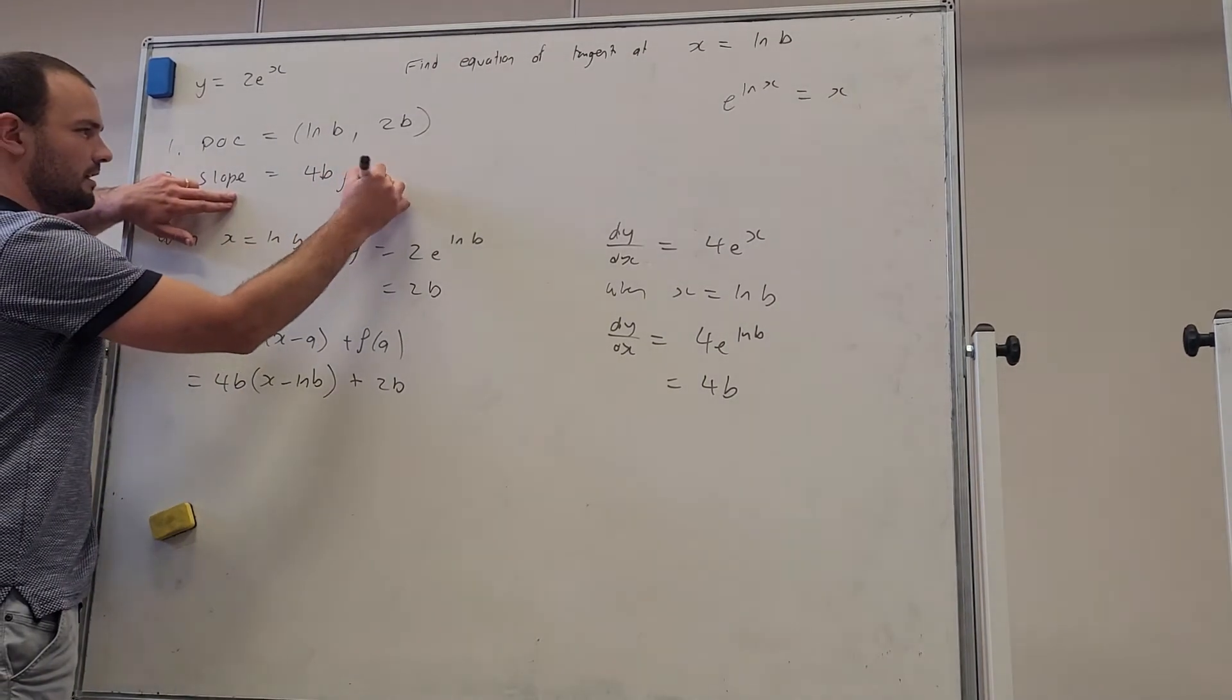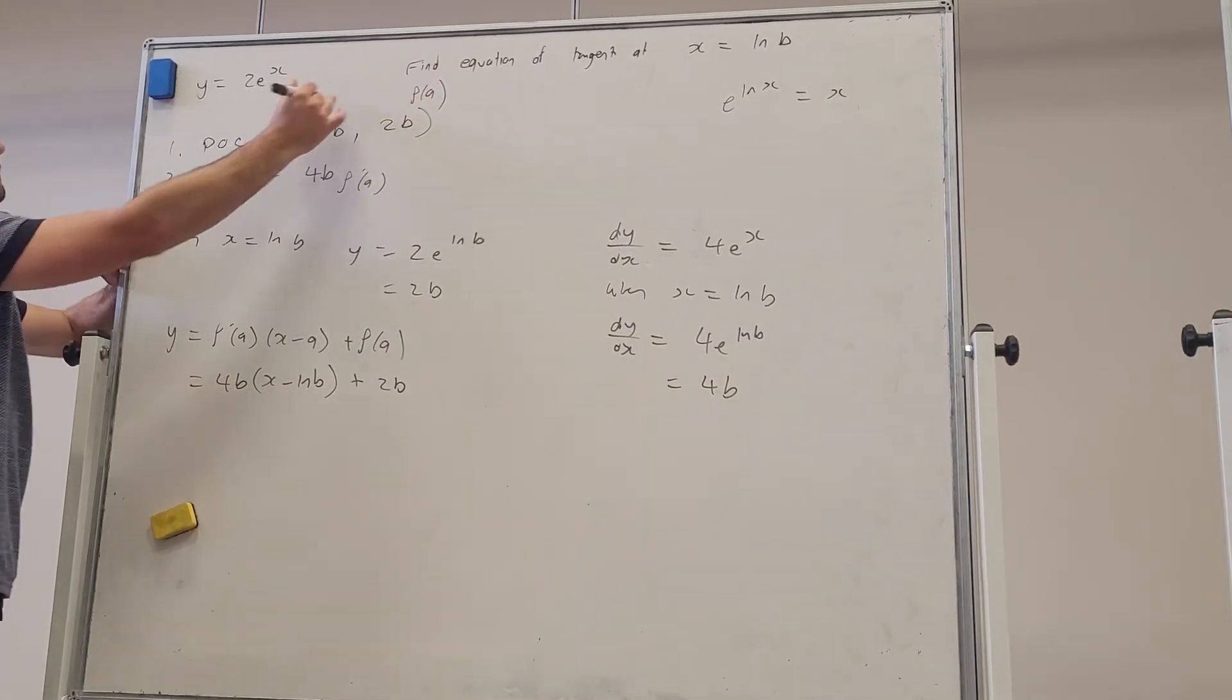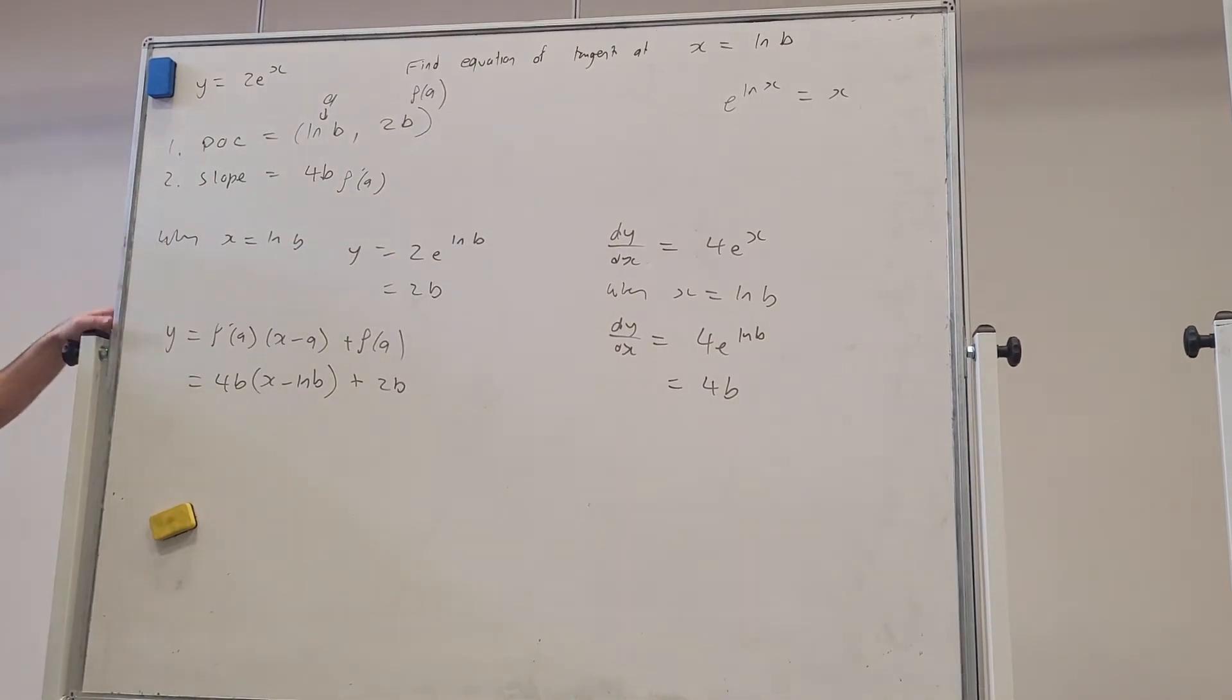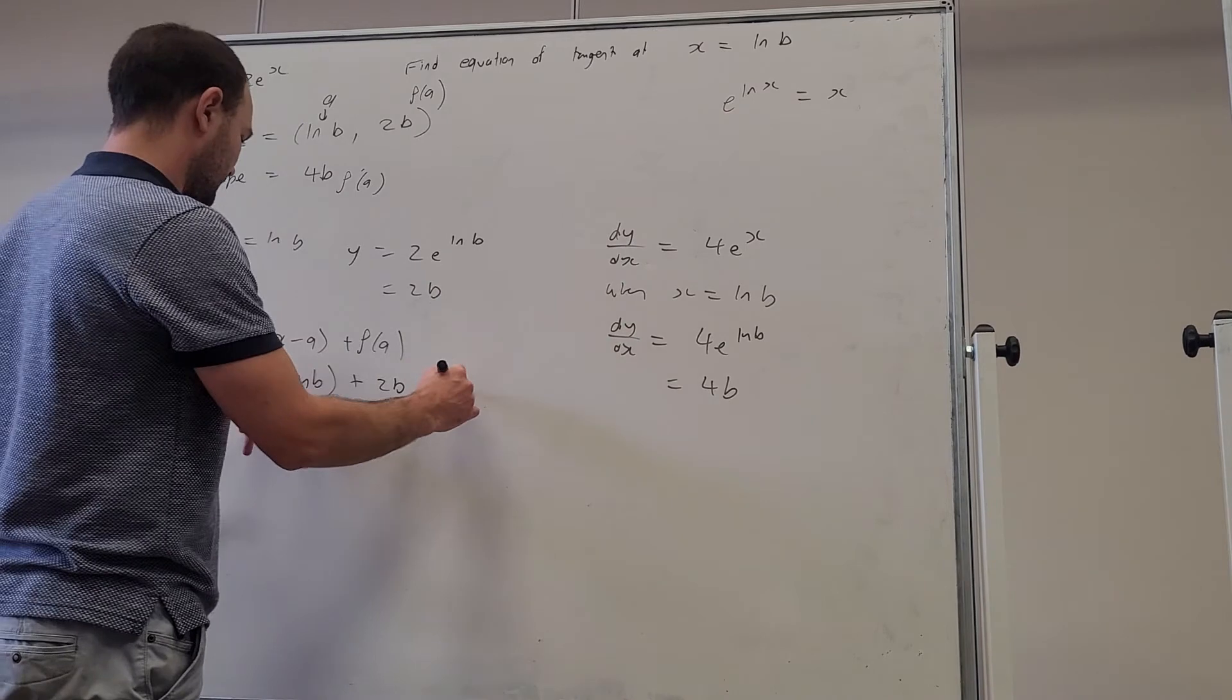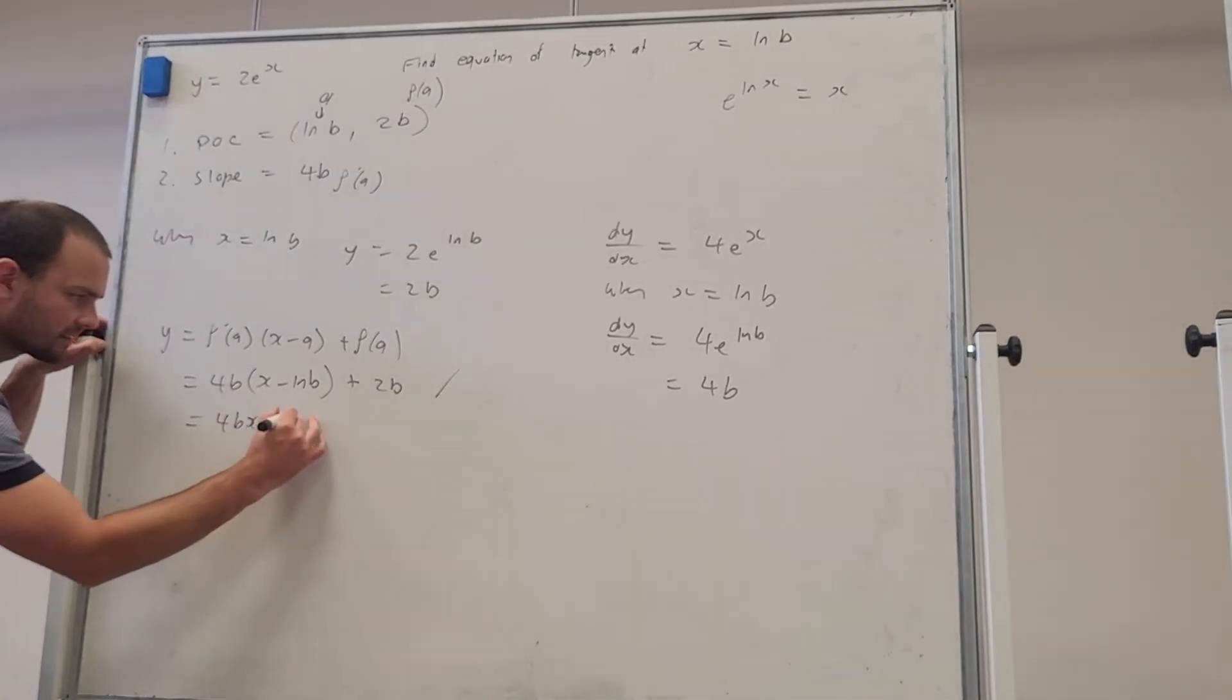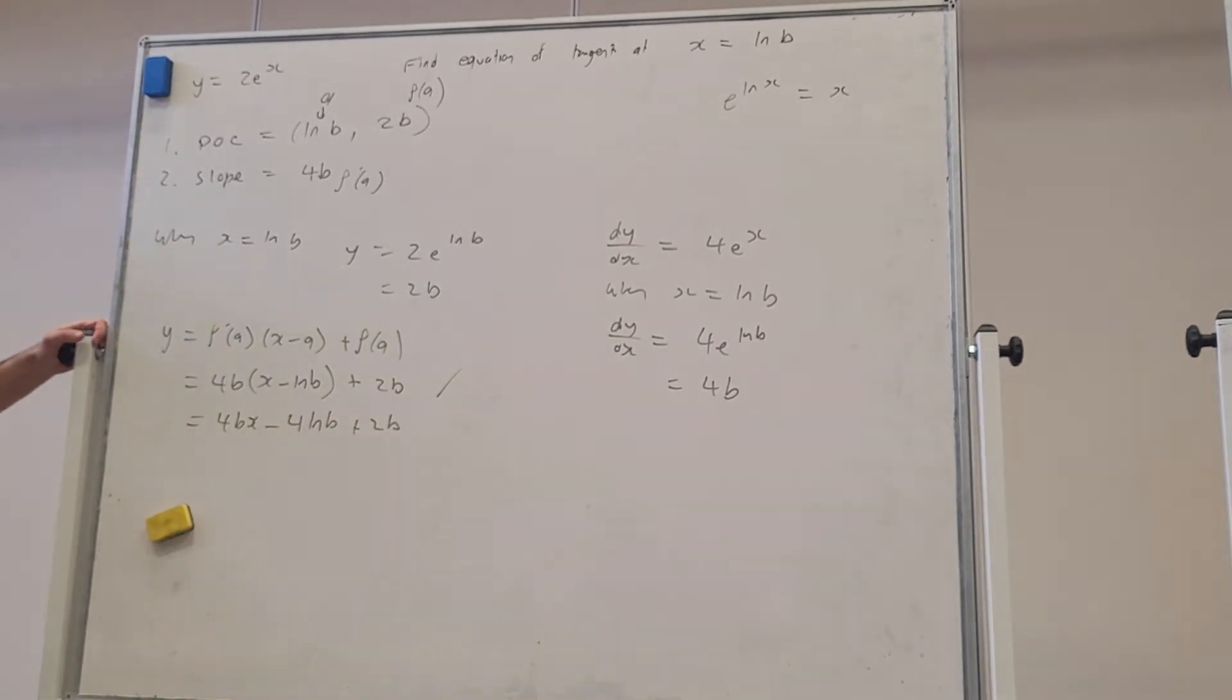So here was f'(a), and here is f(a), and then a, this is a. So you've got a, f(a), f'(a). And we'll just put that information in. We'll just leave it like that. Okay, we could expand it. So we have y = 4bx - 4b ln b + 2b. But it doesn't tell us much more information.